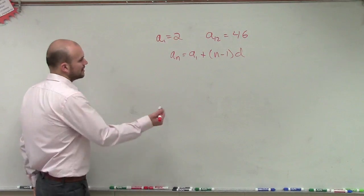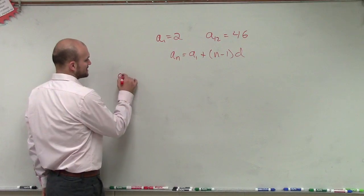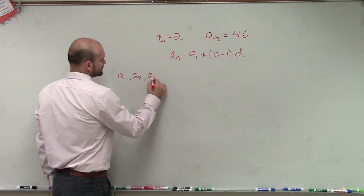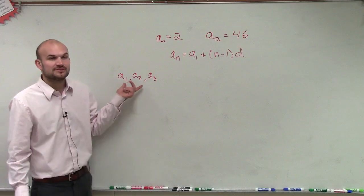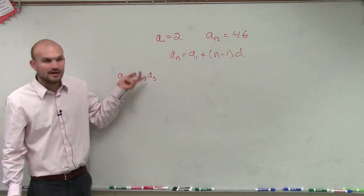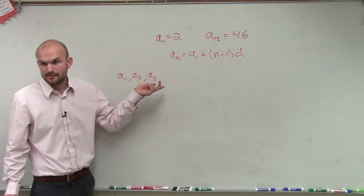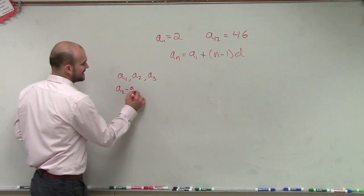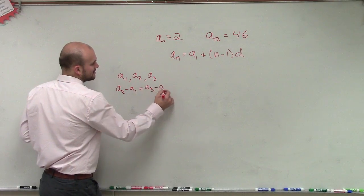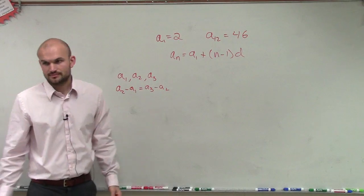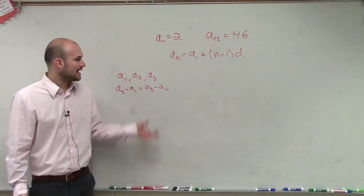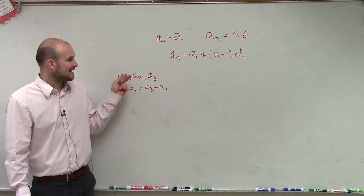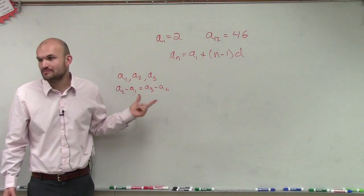Let me give you an example. If you remember, an arithmetic sequence has the same difference between a₁ and a₂ as between a₂ and a₃. So we'd say a₂ - a₁ = a₃ - a₂, correct? However, could I take a₃ - a₁ and divide that by 2, and would that still give me the difference?